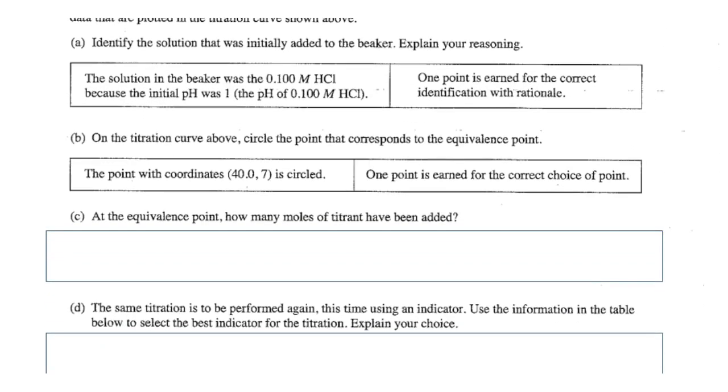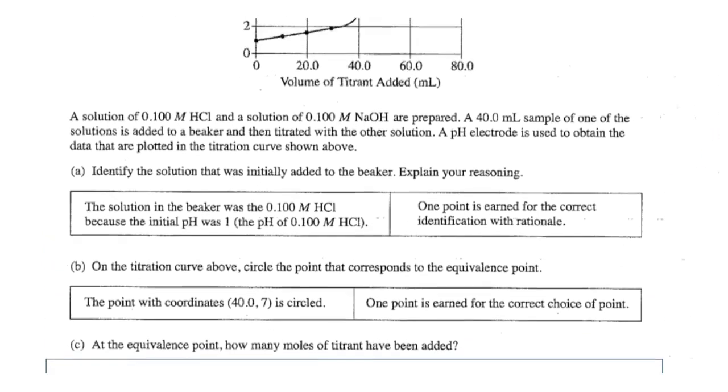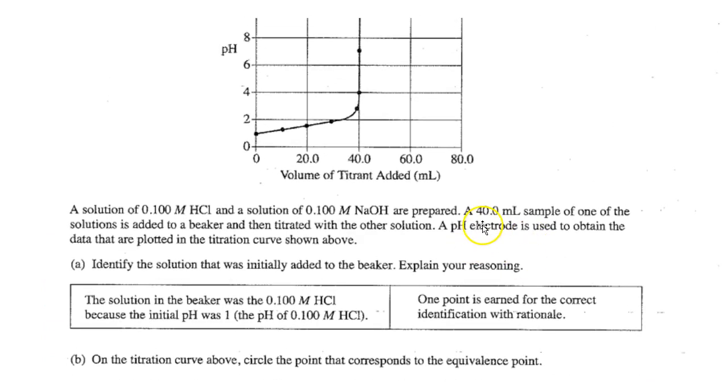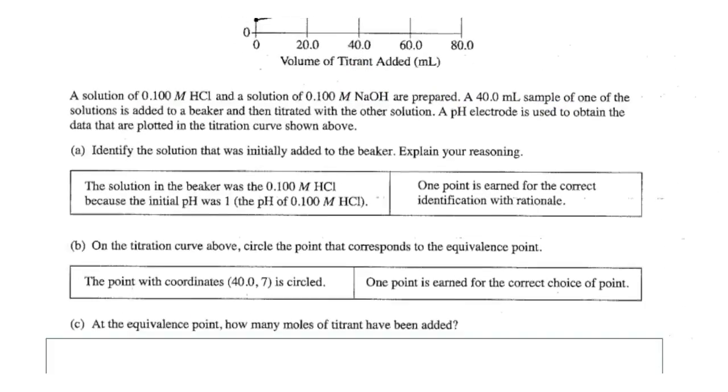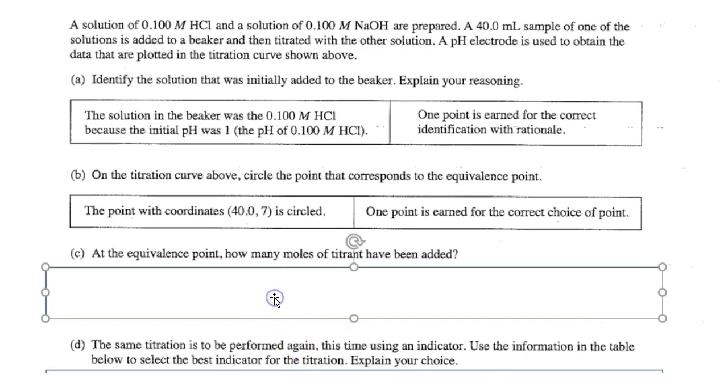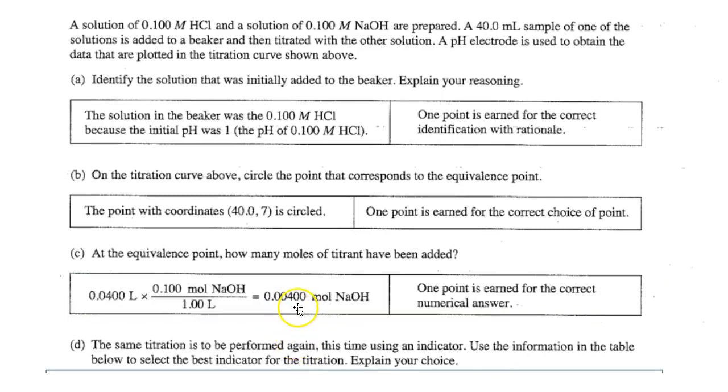At the equivalence point, how many moles of titrant have been added? Moles? That's interesting. Well, you have 40 mils of 0.1 molar, right? So that's 0.04 times 0.1. I think it's 0.004 moles. How do we do? There it is, 0.004 moles. Yay!